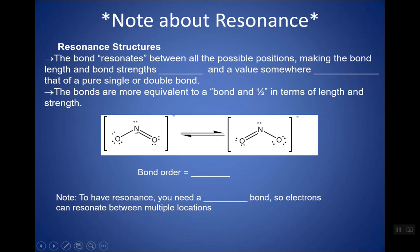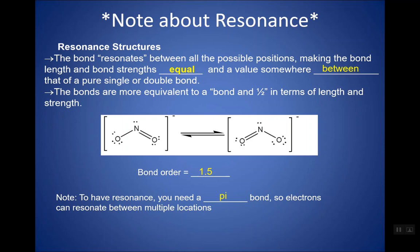In a resonance structure, the bond resonates between all possible positions, making bond length and strength equal — somewhere between that of a pure single or double bond. One resonance structure is not enough to depict it; it's a blend of two or more resonance structures. For NO2⁻, the bond order is actually 1.5 — you count the electron pairs (1, 2, 3) divided by the number of bond locations (2), giving 3 divided by 2 equals 1.5. Remember, to have resonance you need a pi bond, which allows electrons to become delocalized and resonate between multiple positions.